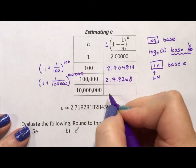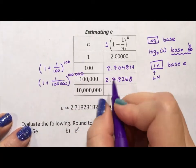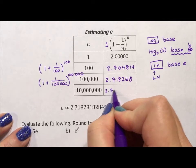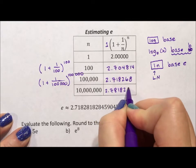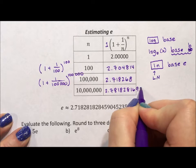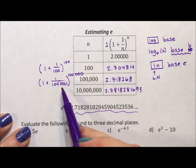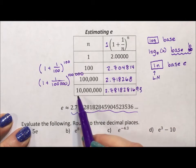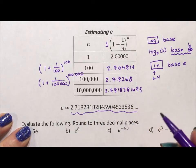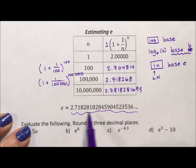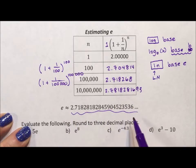And if I were to put in 10 million, I'm not going to write it out, you get the idea, I get 2.7818281693. You see that we're very quickly, if you think of infinity, 100,000 or 10 million is not that big in terms of an infinite number of numbers. We're very quickly converging on to this number of e.